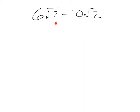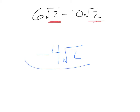Here we have six root two minus ten root two. Let's check if we have like terms: root two and root two — good. So if I do six root twos minus ten root twos, that's going to leave me with negative four square root of two, just doing six minus ten square root of twos.